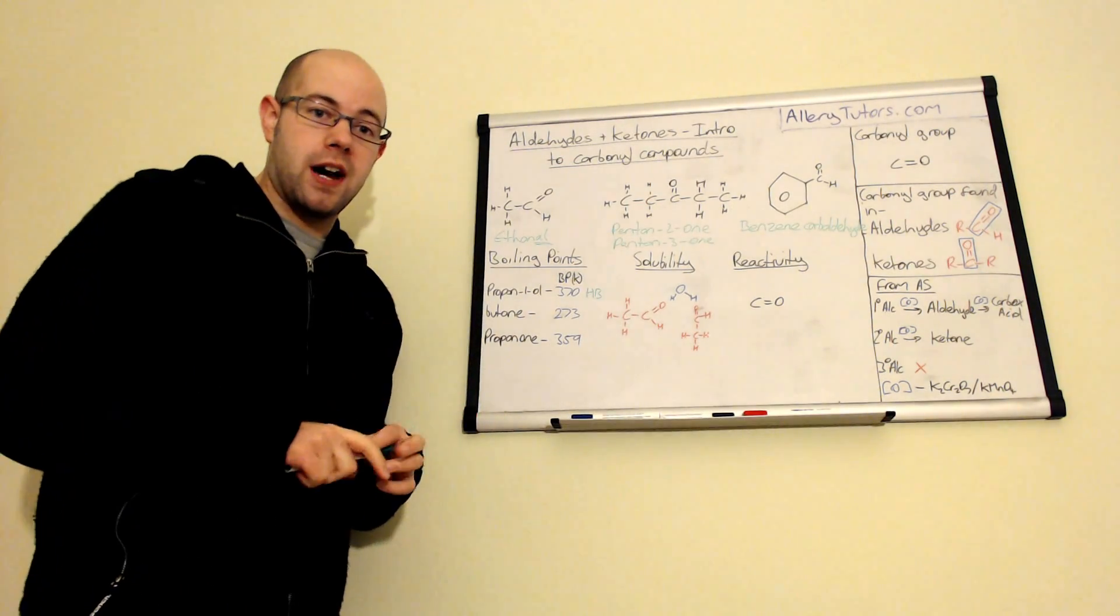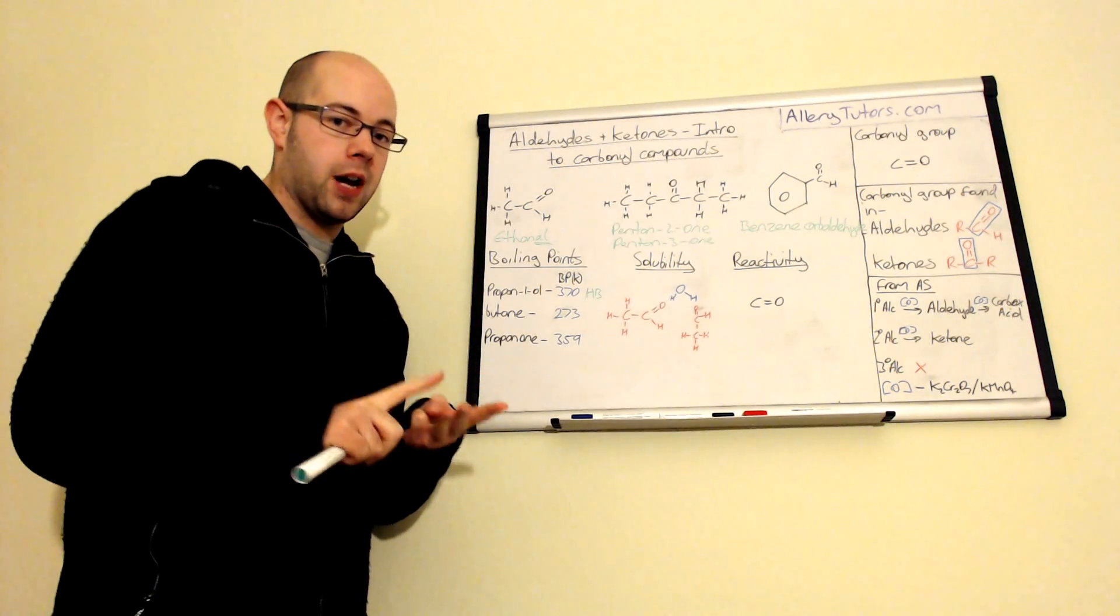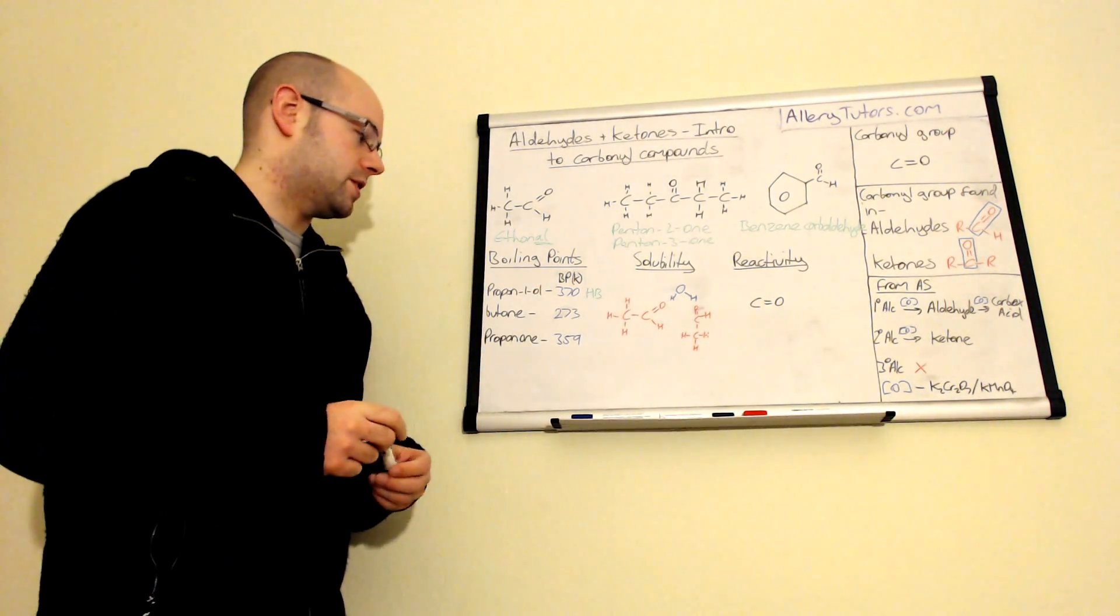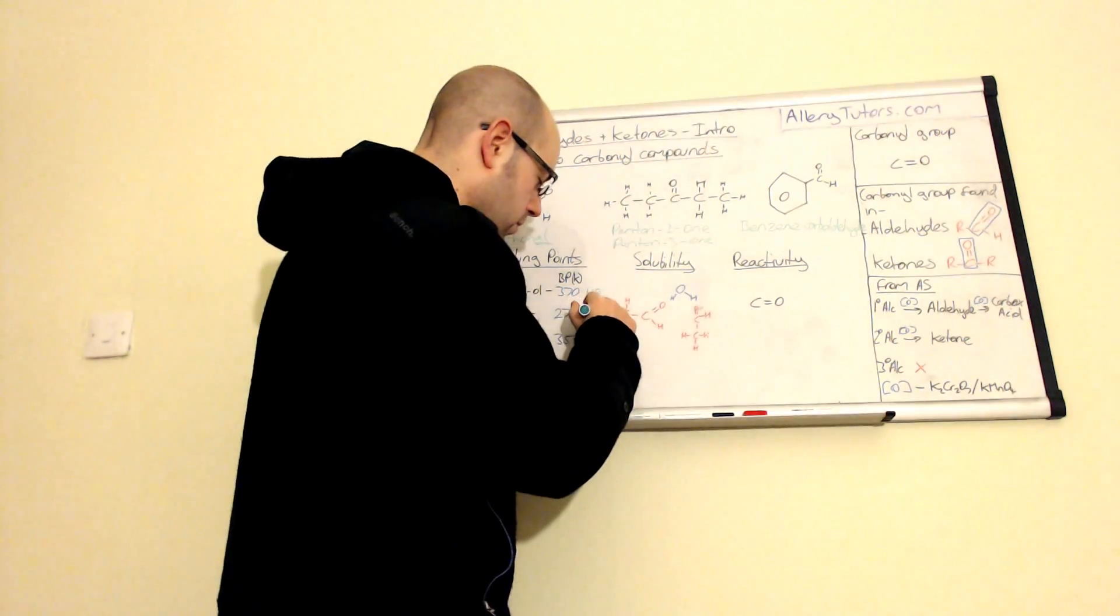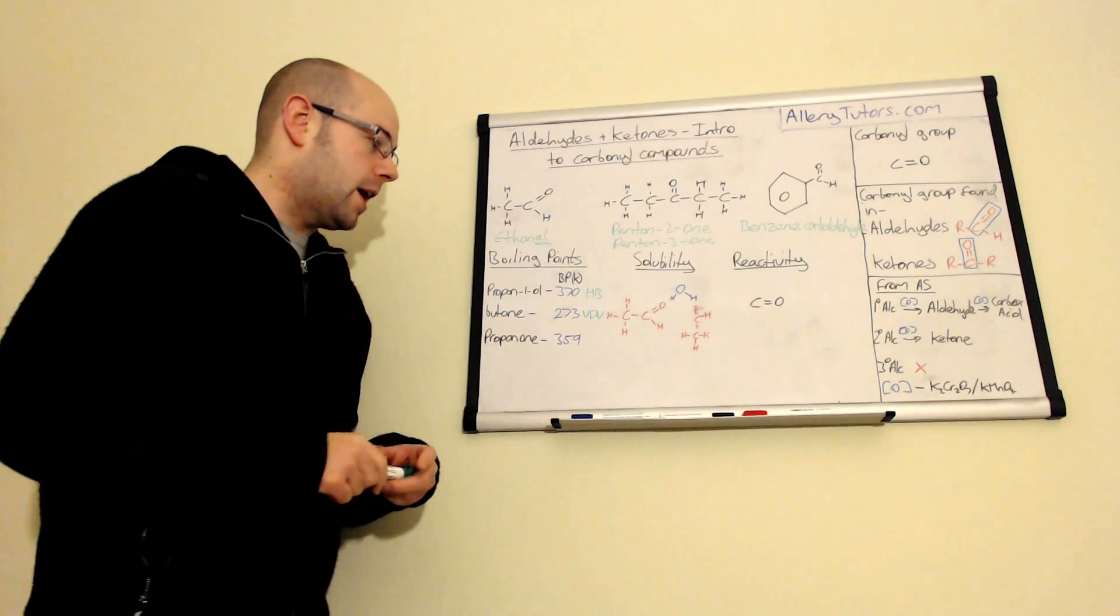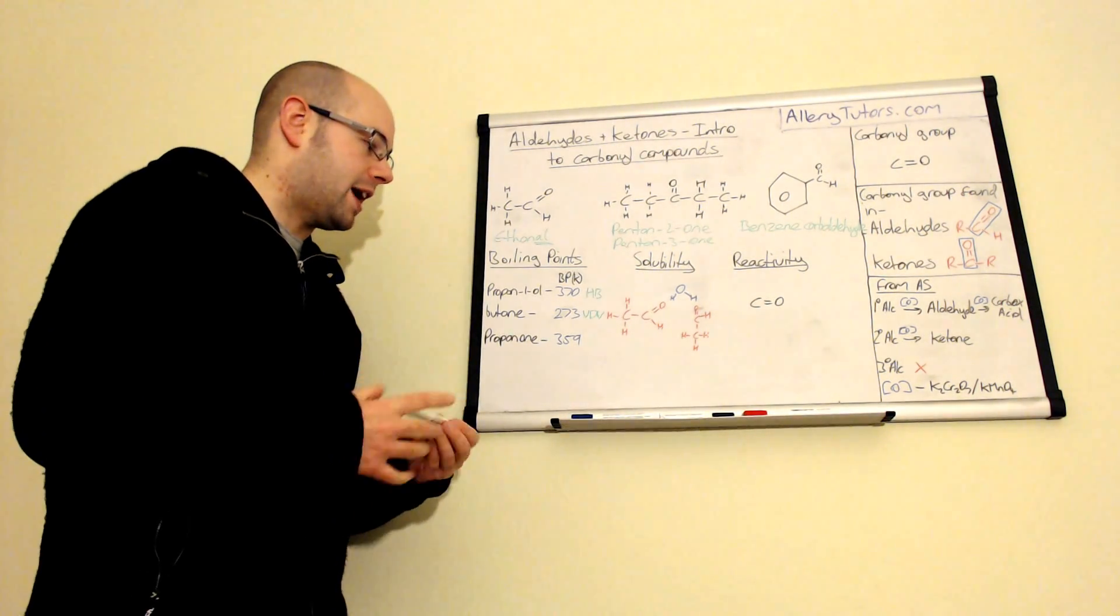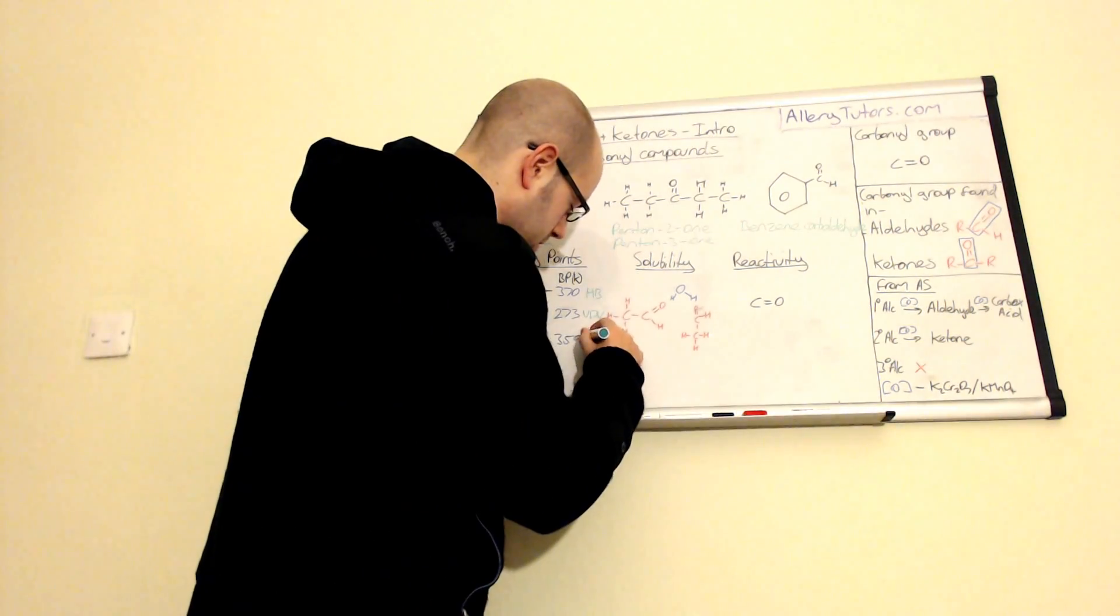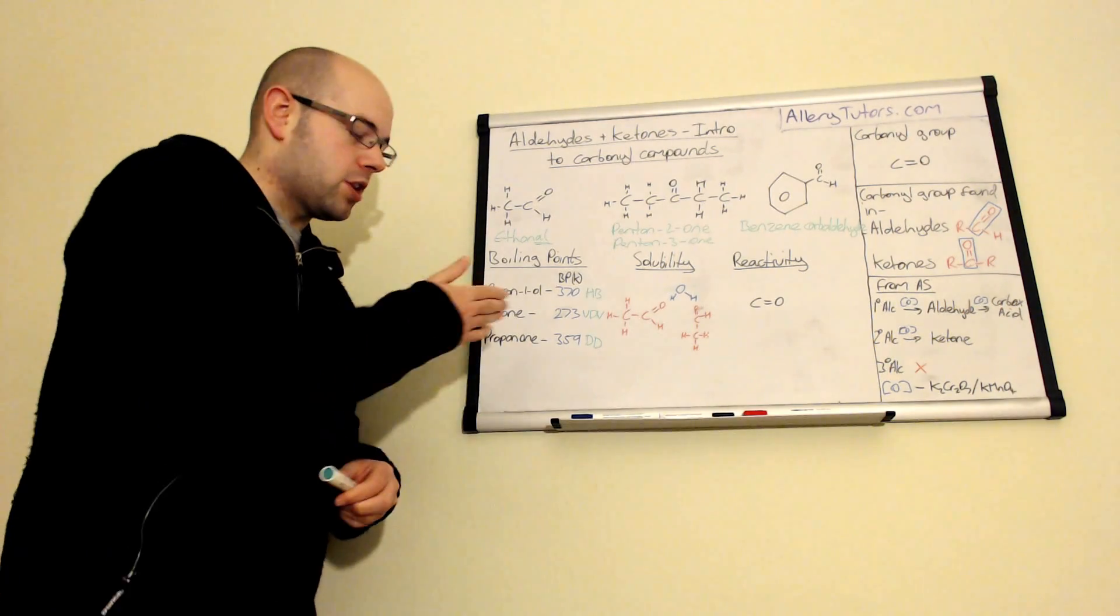Propan-1-ol is an alcohol, so alcohols have hydrogen bonding as their strongest intermolecular force. Propan-1-ol will actually have all three intermolecular forces: van der Waals, dipole-dipole, and hydrogen bonding. Butane is just a bog standard hydrocarbon, so all that has is van der Waals forces. Propanone can't hydrogen bond with another propanone molecule, but it can interact via a dipole-dipole. So that shows this dipole-dipole interaction.